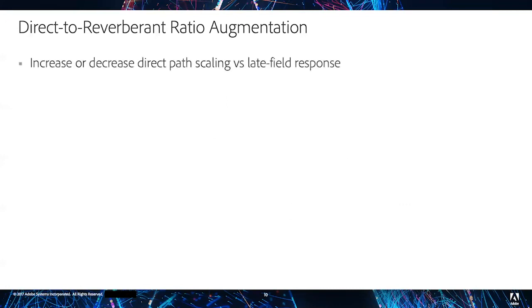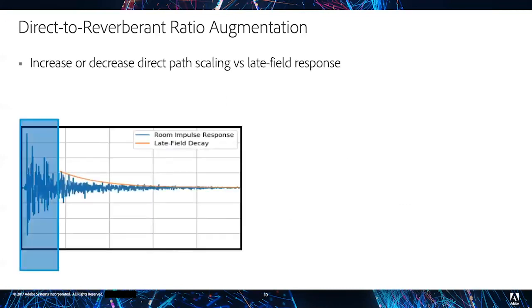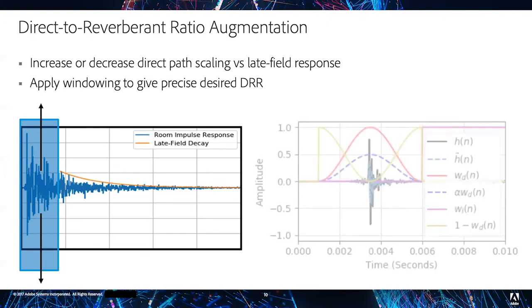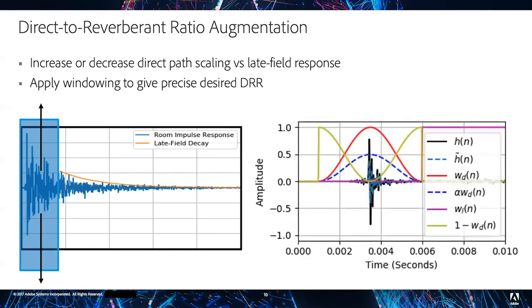To augment the DRR, we simply increase or decrease the direct path scaling of an IR with respect to the late field. To ensure the manipulated IRs do not have any discontinuities, however, we apply a short crossfade window around the direct path of each IR to smoothly apply any manipulation. In the paper we go into further details on how you can do this windowing and computation in a way that you can specify the exact DRR you seek given any input.